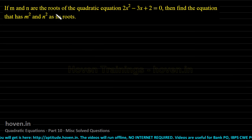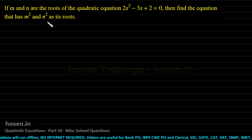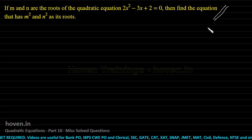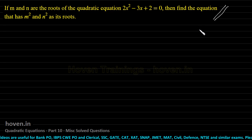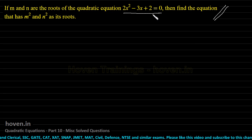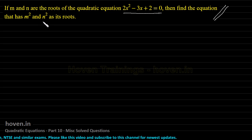If m and n are the roots of the quadratic equation 2x² - 3x + 2 = 0, find the equation that has m² and n² as its roots. This question looks tough at first. You might think of a simpler solution: solve the equation manually to obtain m and n, create m² and n², then use them to construct the equation. But this won't work.